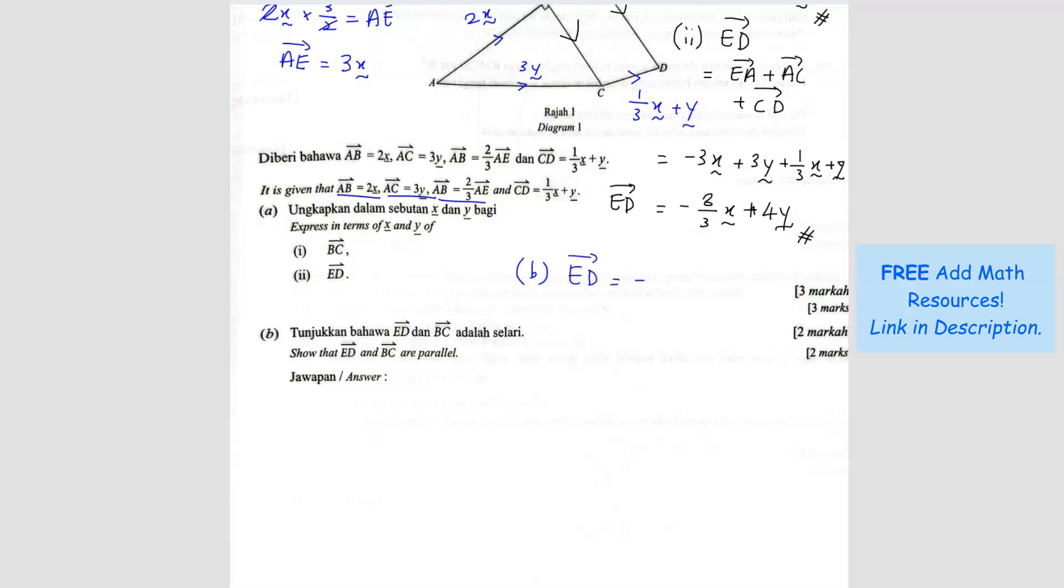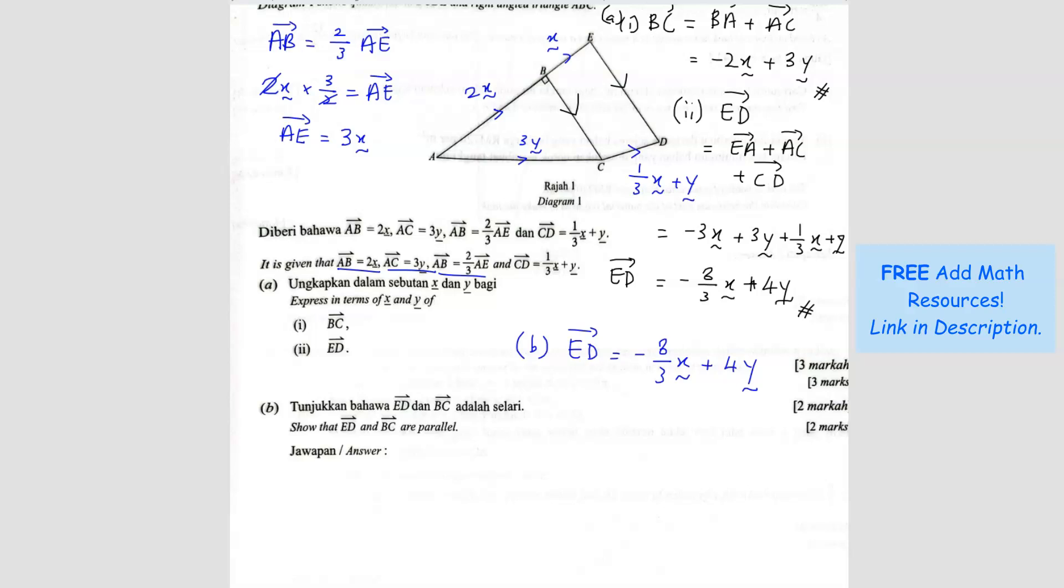ED equals negative 8 over 3X plus 4Y. We have to try to make it the same as BC. So we know that BC is negative 2X plus 3Y. So we want to make it turn into negative 2X plus 3Y. So what number do we factorize such that when we multiply in, we get back the ED. That's how we show the relationship.